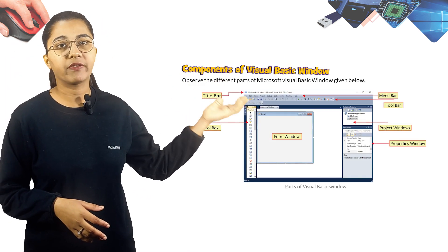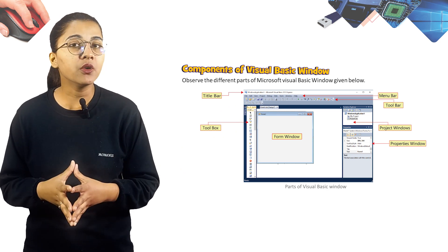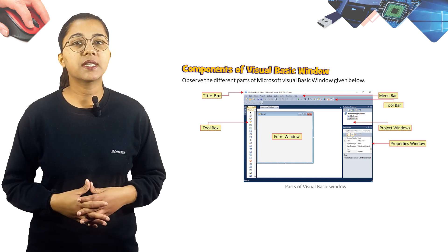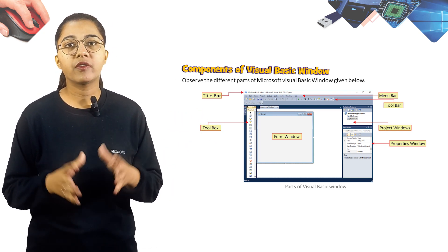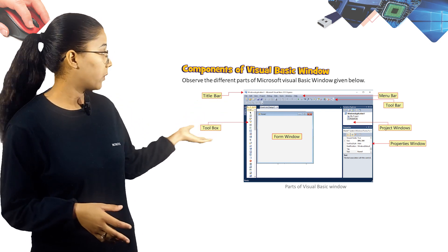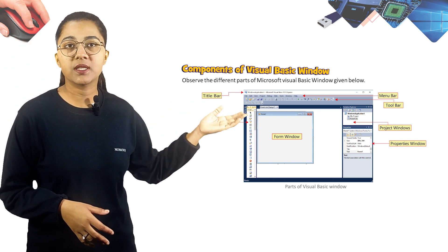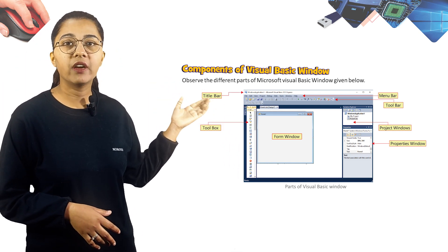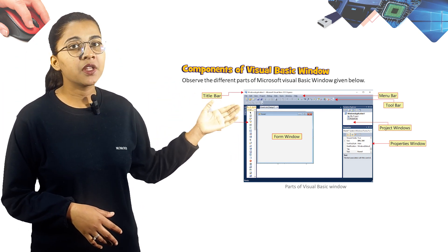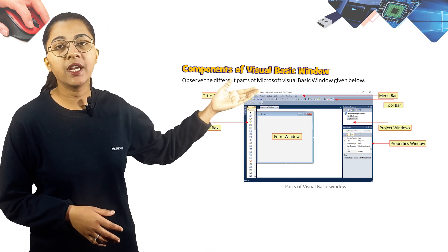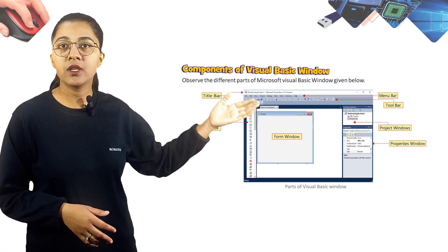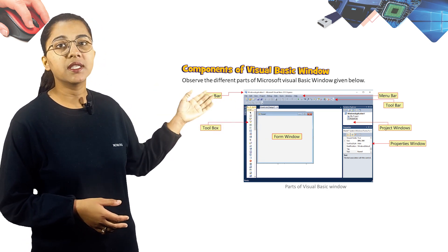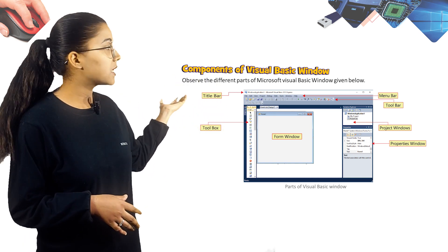Now we are going to learn about the components of the Visual Basic window. Observe the different parts of the Microsoft Visual Basic window. Here you can see the interface: there is the Title Bar, then the Toolbox, the Form Window, the Menu Bar, the Toolbar, the Project Window, and the Properties Window.